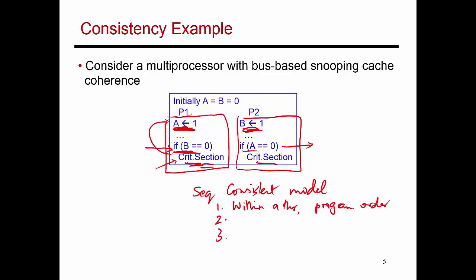The second assumption is that each instruction executes atomically — when you execute one instruction, it is as if that is the only thing running in the system, all other processors suspended and waiting for it to finish. This makes it easier to reason about the program because while thinking about A equals 1, you don't have to reason about what all the other processors are doing. One instruction starts, finishes, then the next starts, finishes, and so on.